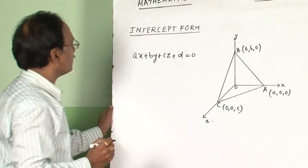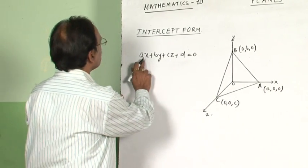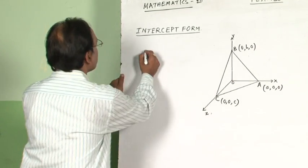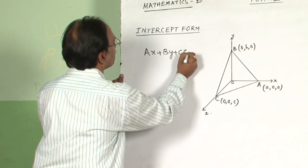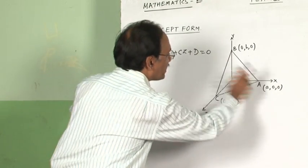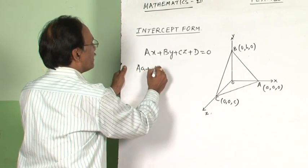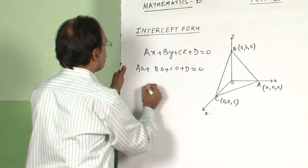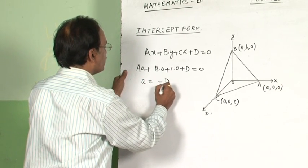In this equation, this plane passes through the point A. Therefore, when we substitute, the coordinates of point A will satisfy. So we get A·A + B·0 + C·0 + D = 0. So we get the value of this intercept A is equal to minus D over A.